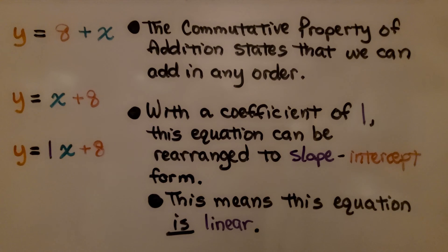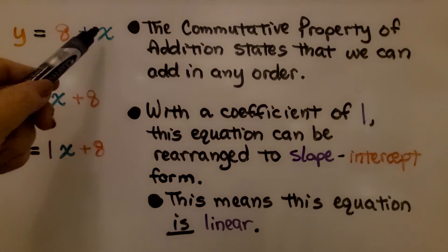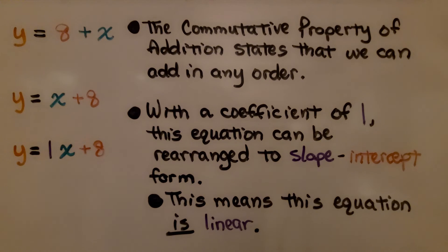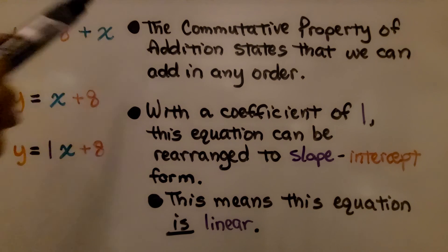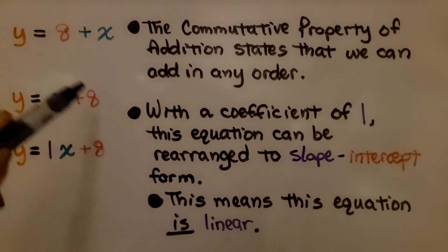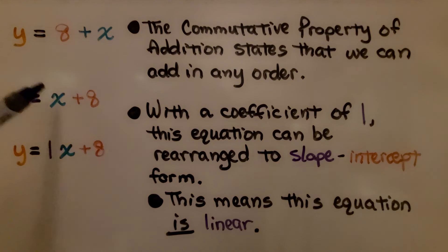Now look at this one. Is this a linear equation? We have y equals 8 plus x. Do you remember the commutative property of addition states that we can add in any order? So we're adding 8 and x. That means we could switch it around and do x plus 8. Now we have our x and our y-intercept b. With a coefficient of 1, this equation can be rearranged to slope-intercept form. This means this equation is linear.